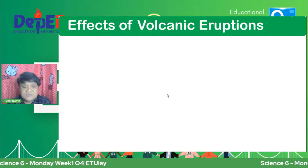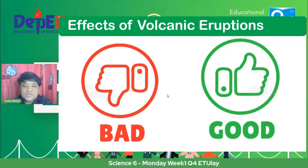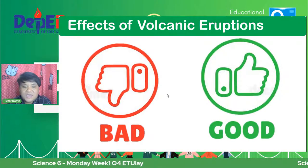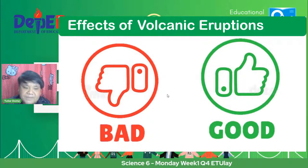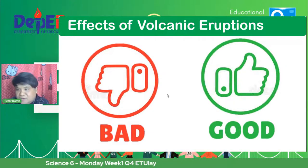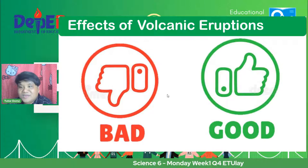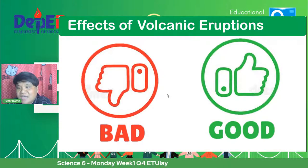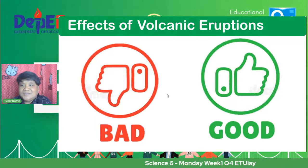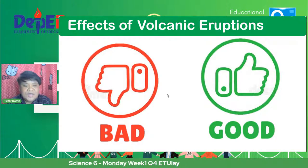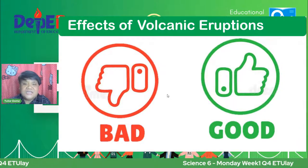So these are the effects of volcanic eruption. Punta tayo sa ating laro na good and bad. Kapag good effects sa volcanic eruption, thumbs up. Pag bad effect, thumbs down. Okay, during volcanic eruption, very hot lava flow can burn anything in its path. So pagka nagkakaroon ng volcanic eruption, yung lava na yun pag dumdaloy, kahit saan pasusunog daw yun. Is it good or bad? And the answer is it's a bad effect.